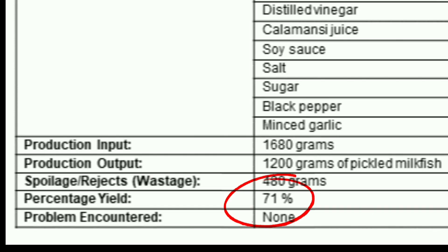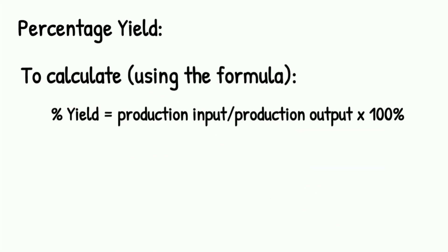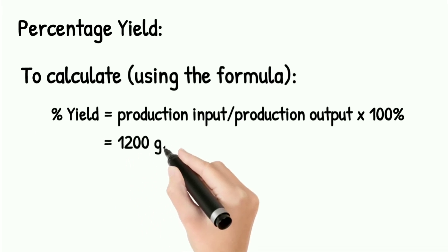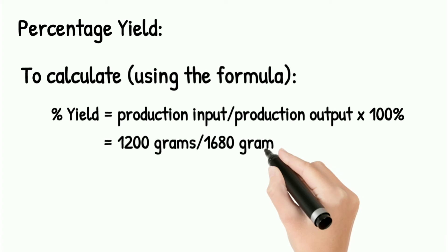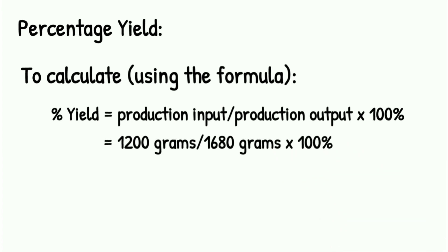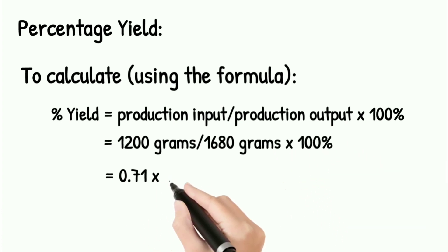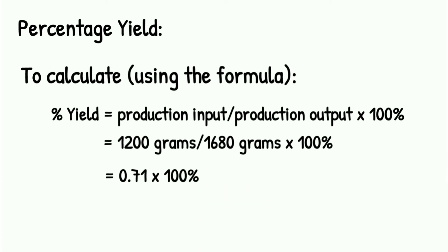Percentage yield is 71% since this is the percentage value of 1,200 grams from 1,680 grams. The output is 1,200 grams due to wastage of 480 grams from the original 1,680 grams. Using the formula: 1,200 grams ÷ 1,680 grams × 100% = 0.71 × 100% = 71% percentage yield.